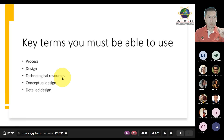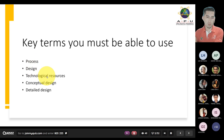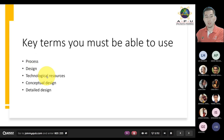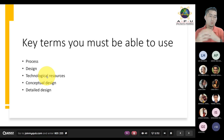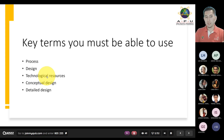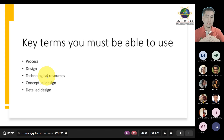The key terms which are involved include the definition of processes and design, and looking at technological resources towards the end as well. Prior to that, we are going to look at the two main parts of design — one is called conceptual and the other is referred to as detailed design.